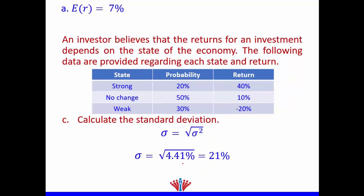The third part is to calculate the standard deviation, or volatility. Standard deviation (sigma) is simply the square root of sigma squared — that is, the square root of the variance. The square root of 4.41% gives us a volatility, or standard deviation, of 21%.